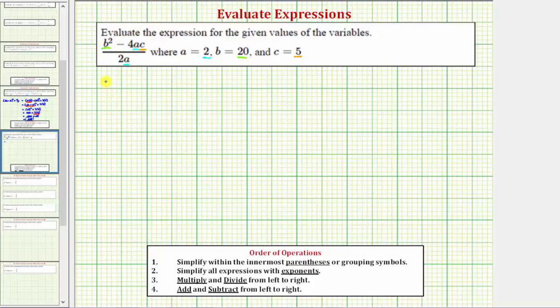So the expression b squared minus 4ac divided by 2a is equal to, again b is 20. So in the numerator we have 20 squared minus 4 times a times c, which would be times 2 times 5, divided by 2 times a, which is 2 times 2.